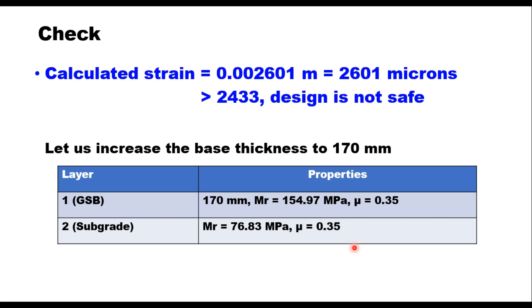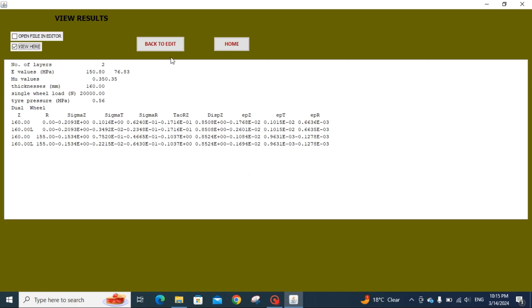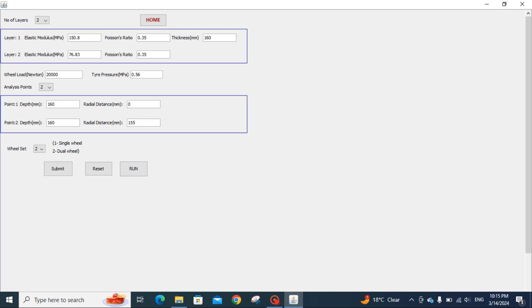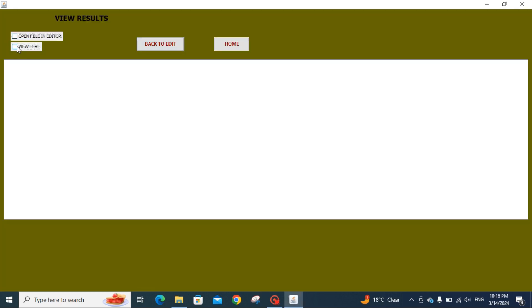We go back to the edit. Let us now change the elastic modulus. Elastic modulus here is 154.97. Poisson's ratio remains same, thickness is now 170. Elastic modulus for subgrade remains same, this is same, this is same, everything is same. Now only the depth of point is now 170. Submit the data, okay, run the program. Okay, now you see the results here.